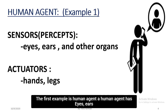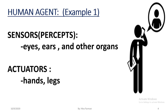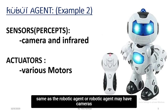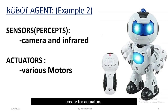The first example is a human agent. A human agent has eyes, ears, and other organs as sensors, and hands and legs are actuators. Similarly, a robotic agent may have cameras and infrared sensors, and various motors that serve as actuators.